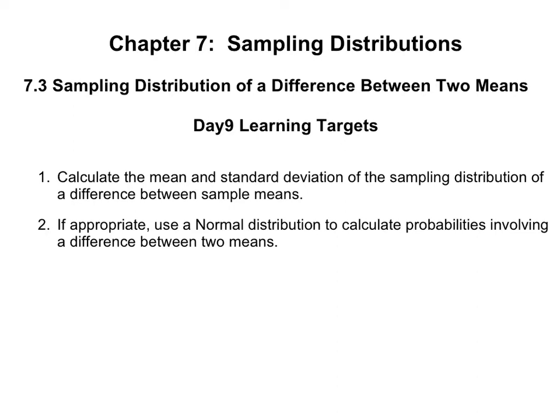We have two learning targets. First, calculate the mean and standard deviation of the sampling distribution of a difference between sample means. And, if appropriate, use a normal distribution to calculate probabilities involving a difference between two means. When we say 'if appropriate,' that means we're going to be checking a condition for normality.